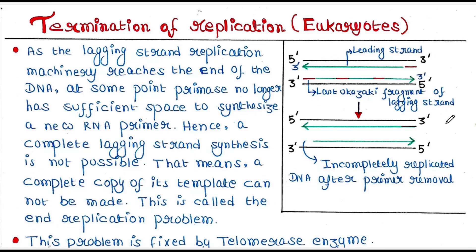Eukaryotic replication has three steps just like prokaryotes: initiation, elongation, and termination. In our last two lectures we discussed initiation and elongation. Today we will focus on the termination part. If you missed the previous lectures, I would highly recommend you go through them to understand today's lecture better.